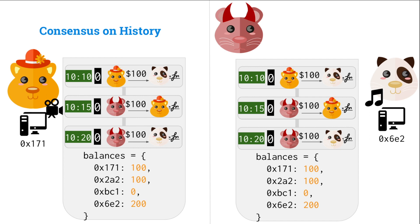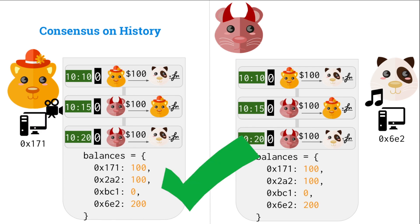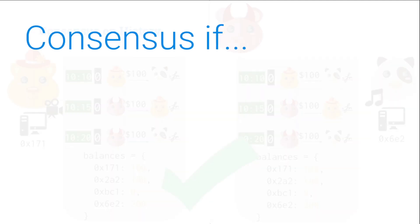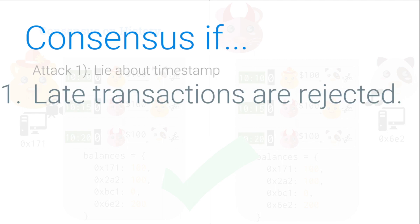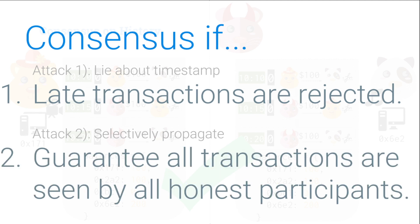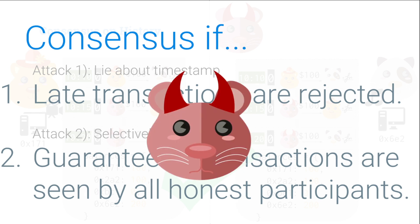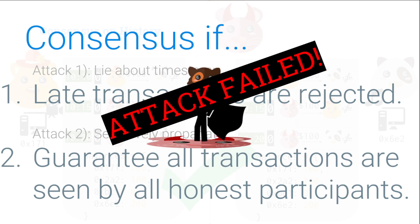Remember that there was a moment when they were out of sync, and that's a problem. We can form consensus if: one, we mitigate attack one — lying about the timestamp — by rejecting late transactions; and two, we mitigate attack two — selective propagation — by guaranteeing that all transactions are seen by all honest participants. With that, attack failed.